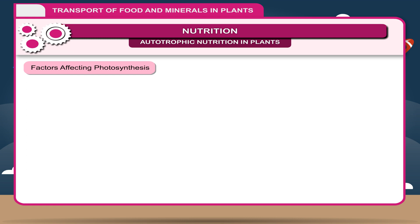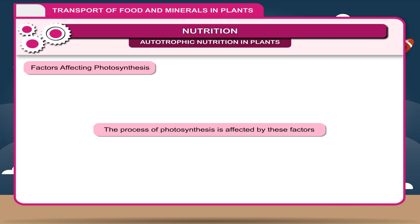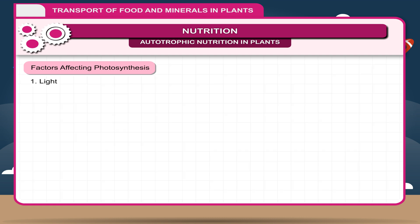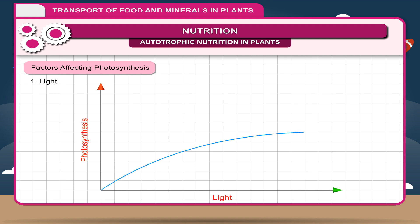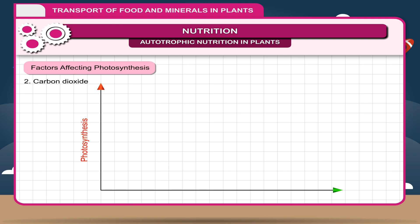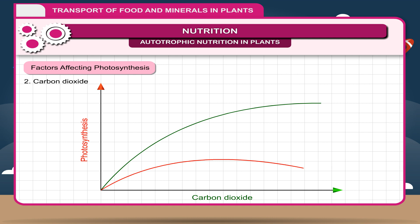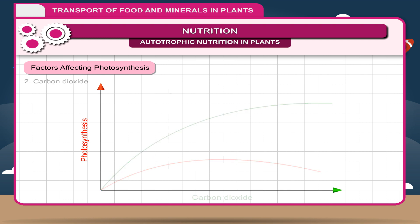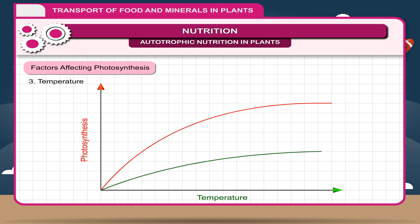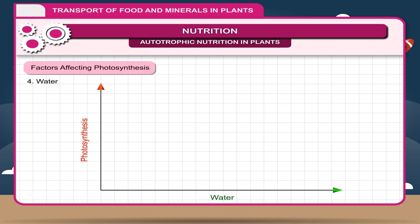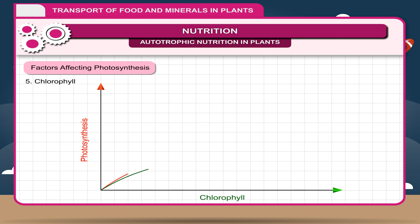Factors affecting photosynthesis: 1. Light — the rate of photosynthesis increases with the intensity of light; the rate is maximum in red light. 2. Carbon dioxide — on increasing the concentration of CO₂, the rate of photosynthesis increases; however, if the concentration is very high, it decreases. 3. Temperature — the optimum temperature for photosynthesis is between 25°C to 35°C. 4. Water — photosynthesis reduces with the decrease of water content. 5. Chlorophyll — if chlorophyll concentration is less, the rate of photosynthesis is adversely affected.